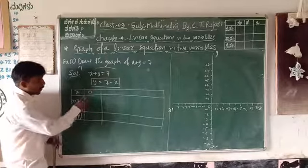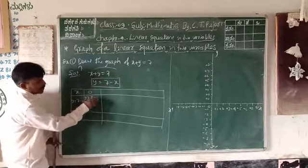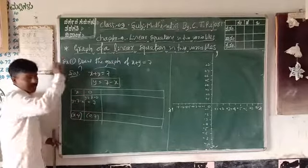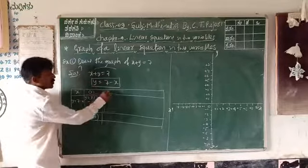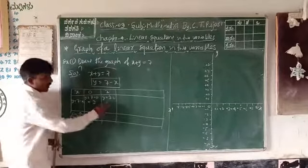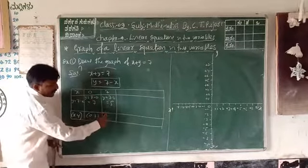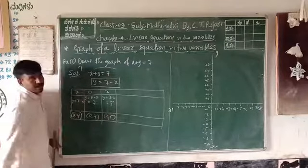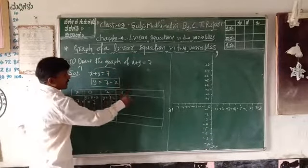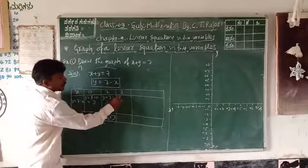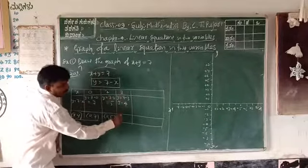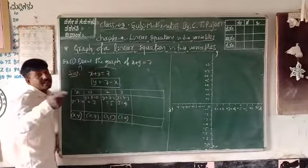Consider X value is 0: Y equals 7 minus 0, which is 7. So the point is (0, 7). Next, consider X value is 2: Y equals 7 minus 2, which is 5. So the points are (2, 5) — where 2 is the X value and 5 is the Y value. Next, consider X equal to 3: Y equals 7 minus 3, which is 4. So the points are (3, 4).